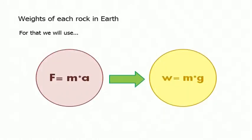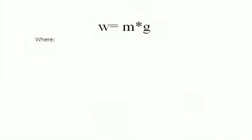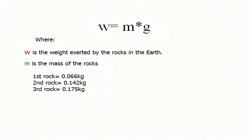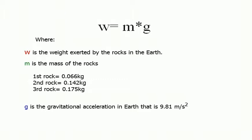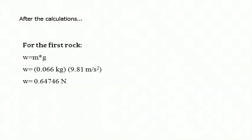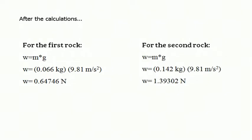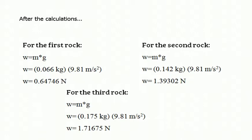Now we need to know the weights of each rock on Earth. For that, we will use Newton's second law of motion transformed into the formula of weight, where W is the weight of the rocks, M is the mass, and G is the gravitational constant on Earth — 9.81 meters per second squared. The first rock had a mass of 0.066 kg, the second 0.142 kg, and the third 0.175 kg. After the calculations, the weight of the first rock was 0.64746 N, the second was 1.39302 N, and the third was 1.7675 N.